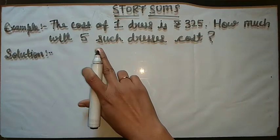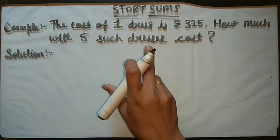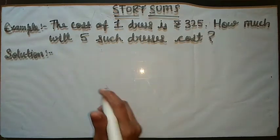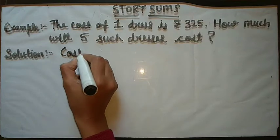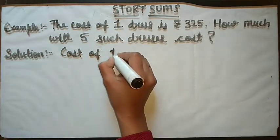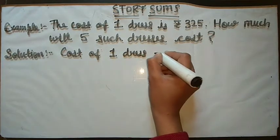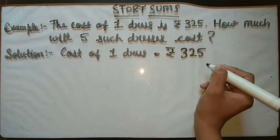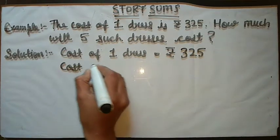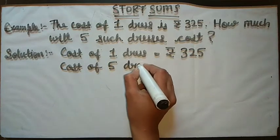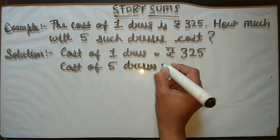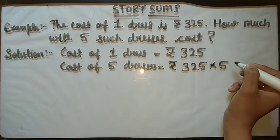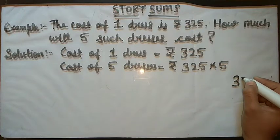We have to do multiplication here. First of all, we will write whatever given in the question. Cost of one dress is Rs 325. Now, cost of five dresses is equal to Rs 325 multiplied by 5.